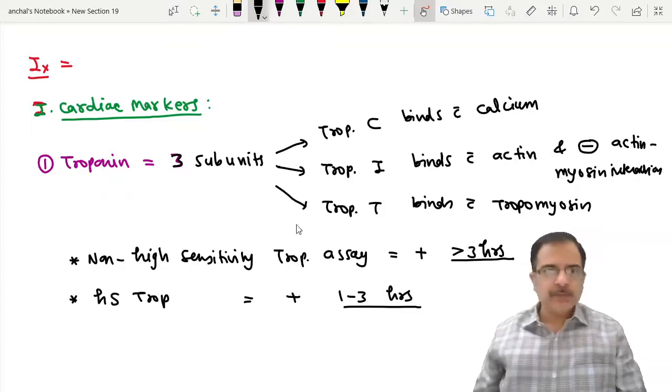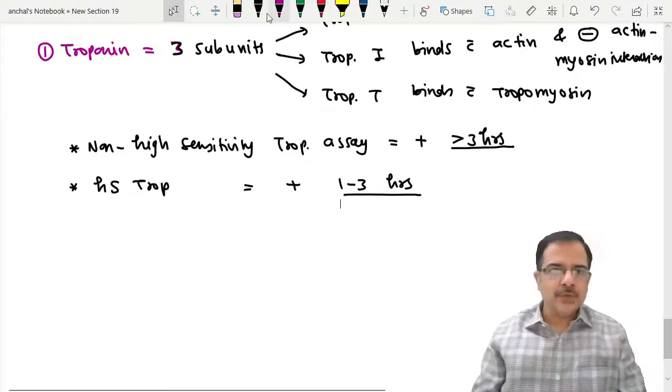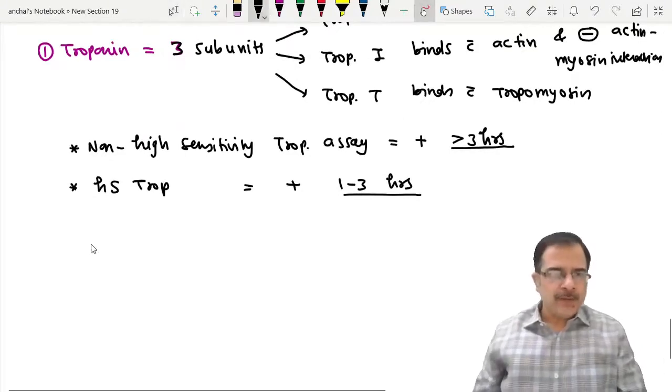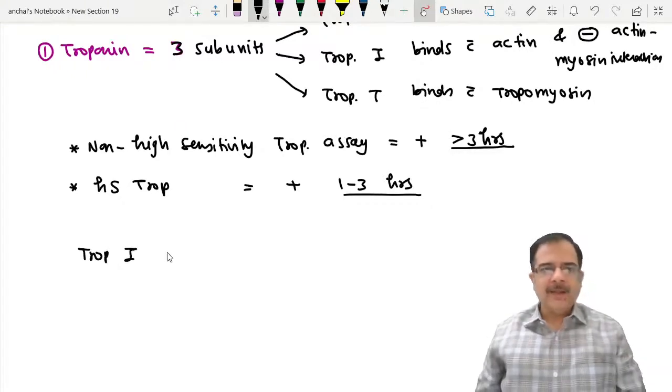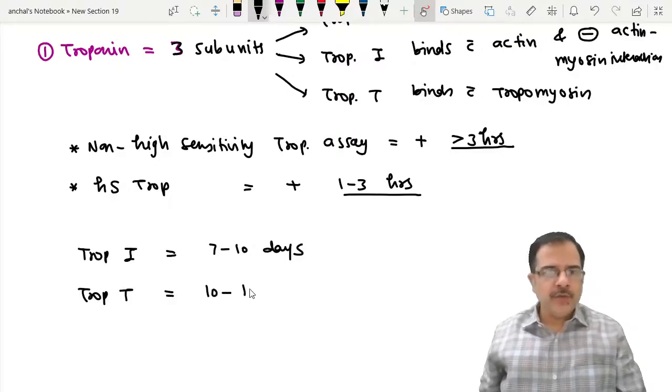How long do they remain in the blood? Troponin I lasts for 7 to 10 days, while troponin T lasts for 10 to 14 days.